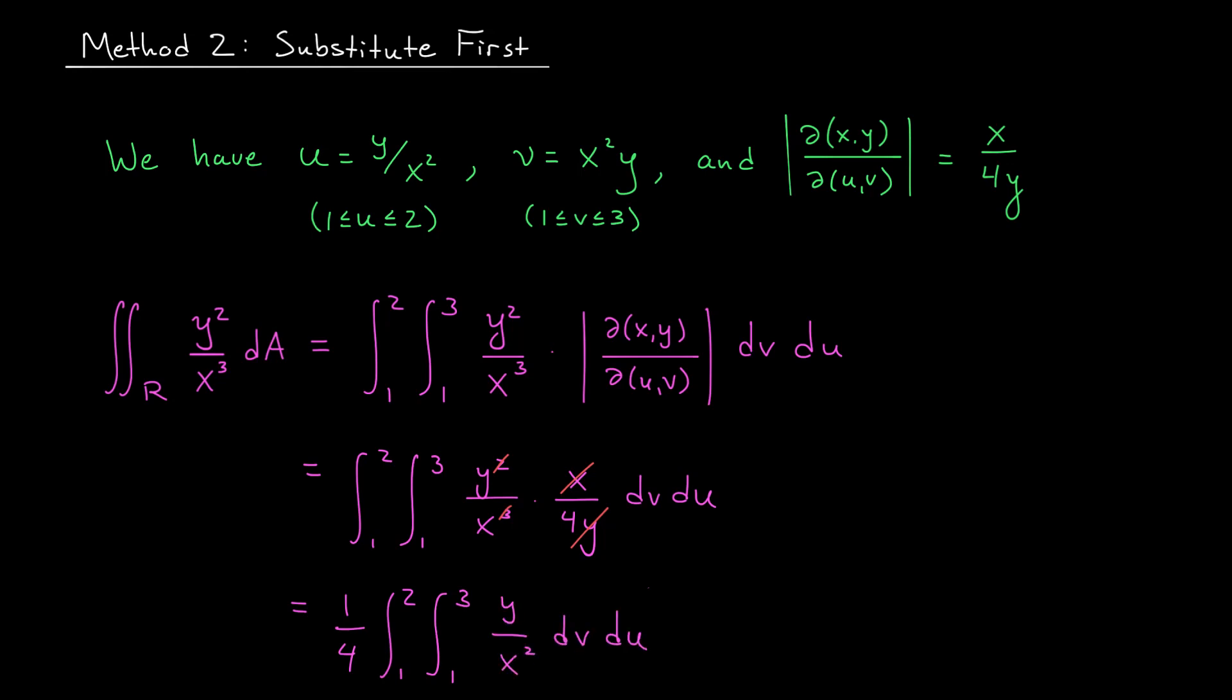Ah, now here's the magic, folks. Y over x squared is exactly u. I can see how to rewrite this expression in terms of my new variables without inverting the transformation. So I get 1 quarter times the integral from 1 to 2 of the integral from 1 to 3 of u dv du.